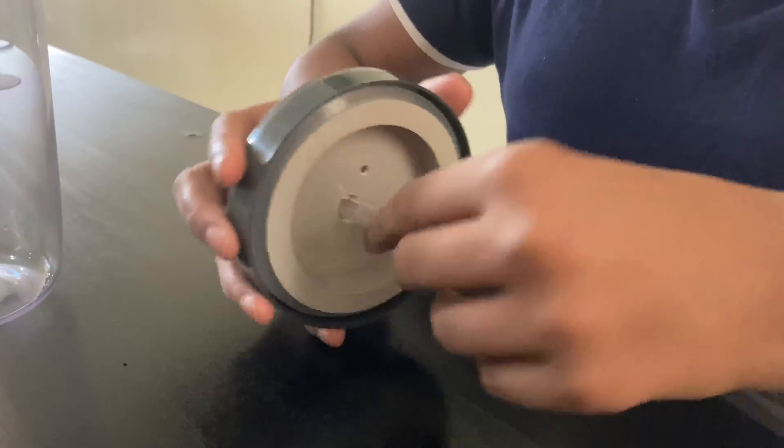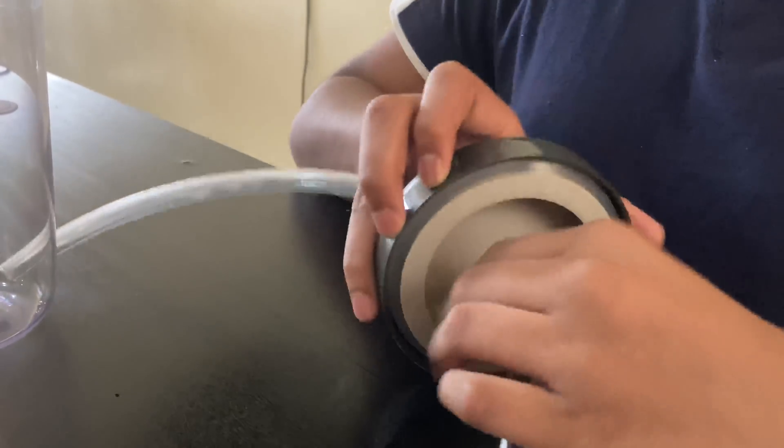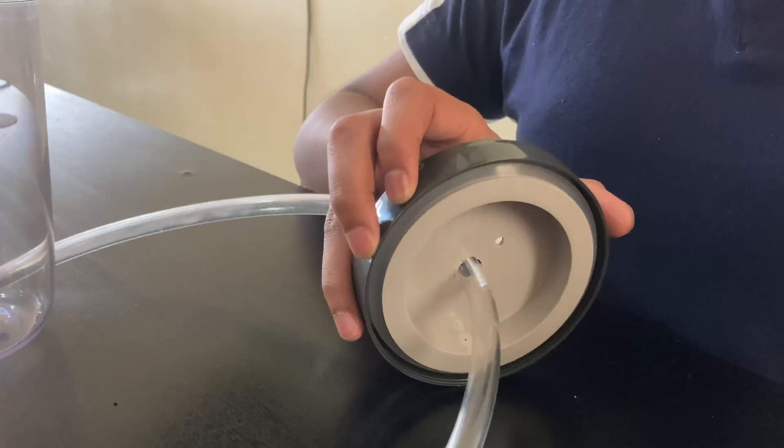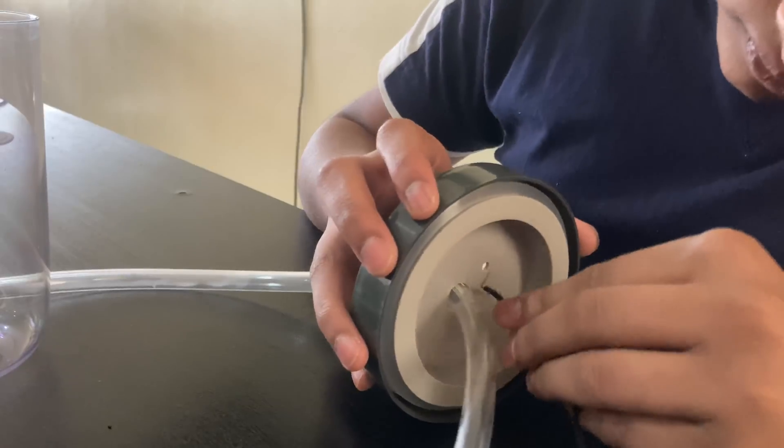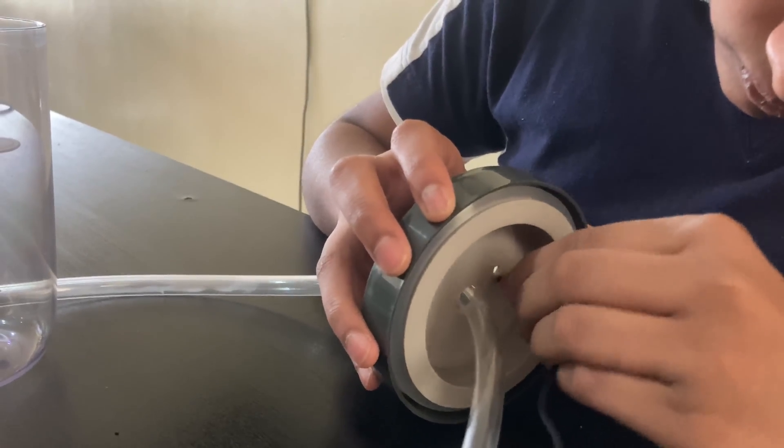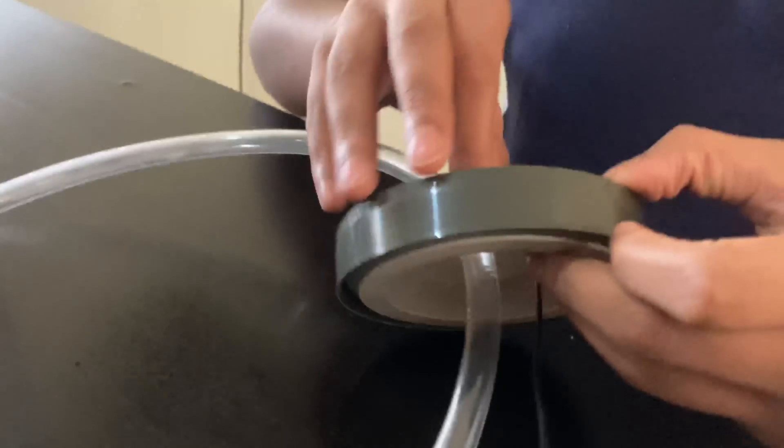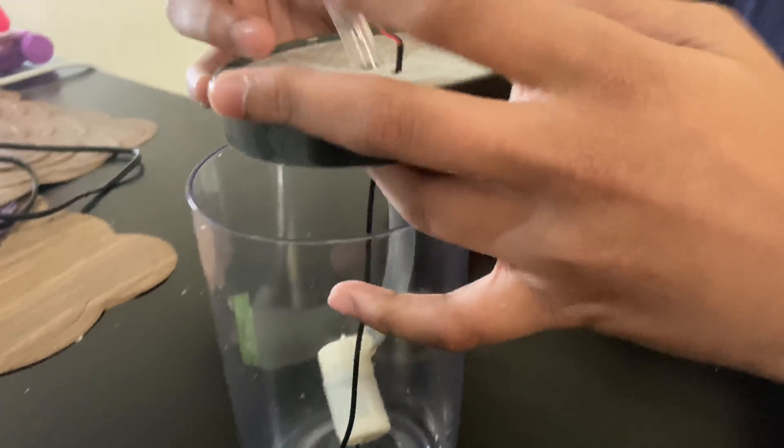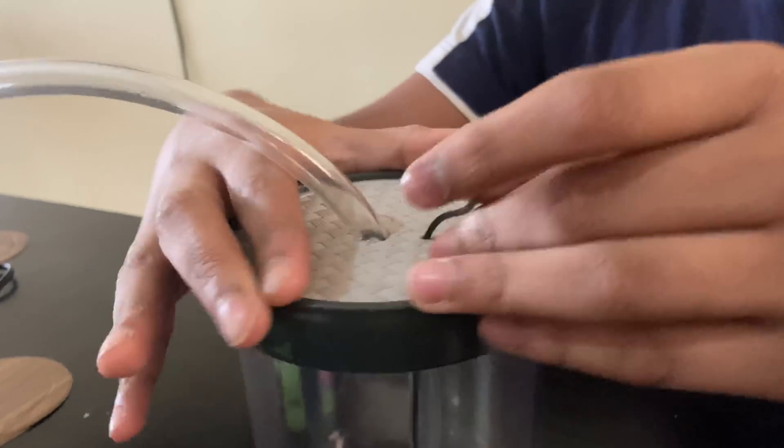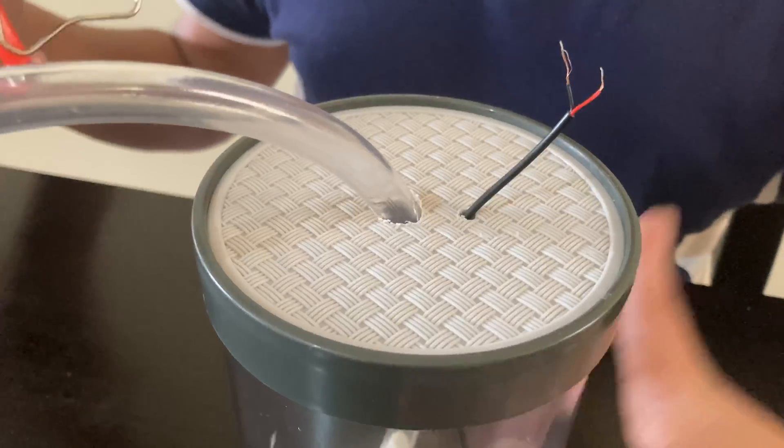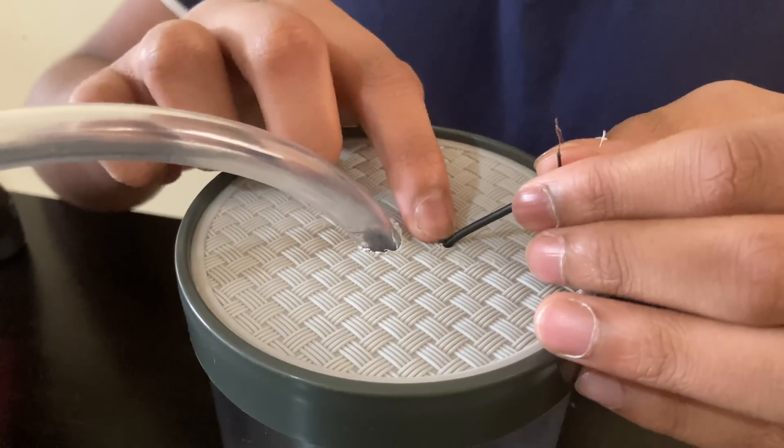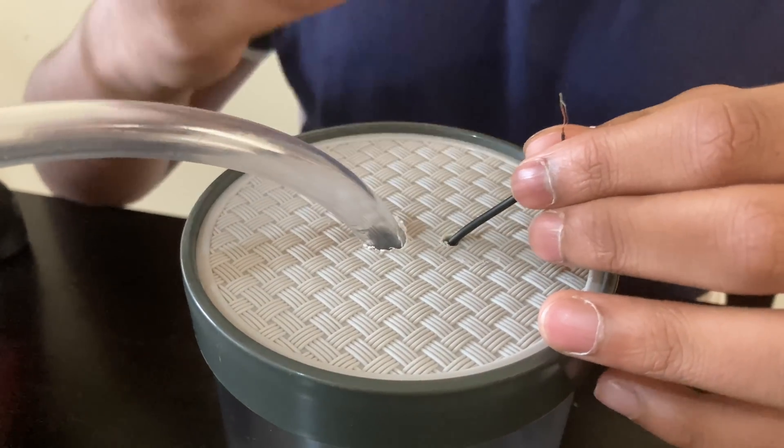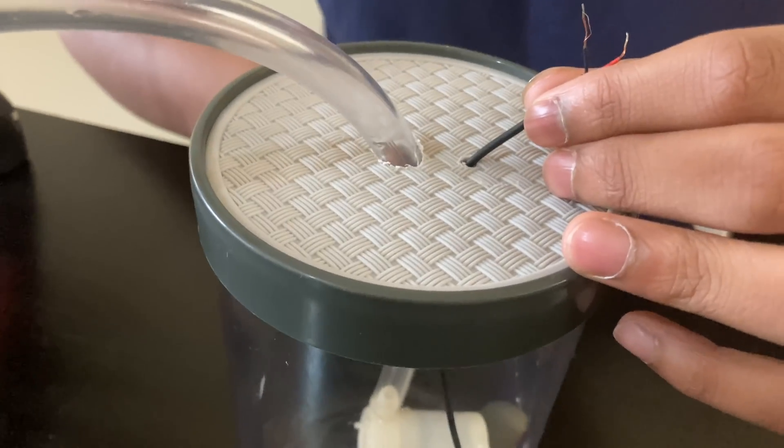So then let's pass it through and let's pass the wire through the small hole. So I am going to seal this with a glue gun. I am not going to seal the wire so it avoids creating a vacuum while the motor is working.